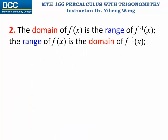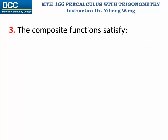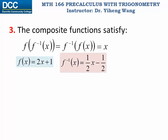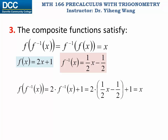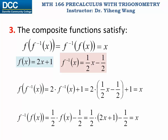The second important property: the domain of the original function is the range of its inverse function, and the range of the original function is the domain of the inverse function. Lastly, for two functions that are inverse functions of each other, their composite functions — whether f composed with f⁻¹, or f⁻¹ composed with f — both equal x. Using our derived example, performing either composite function will give x back.